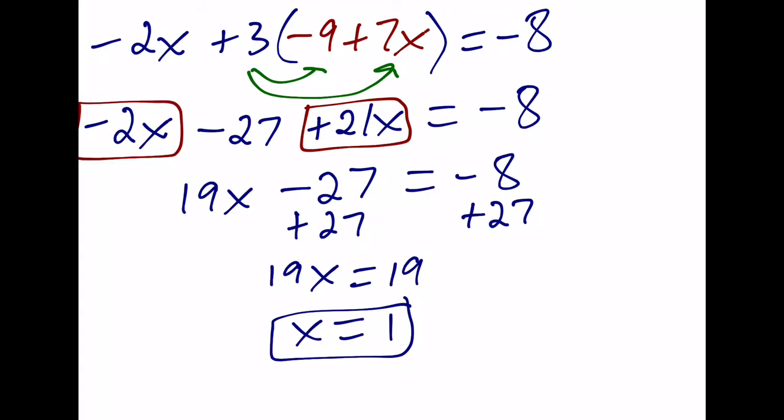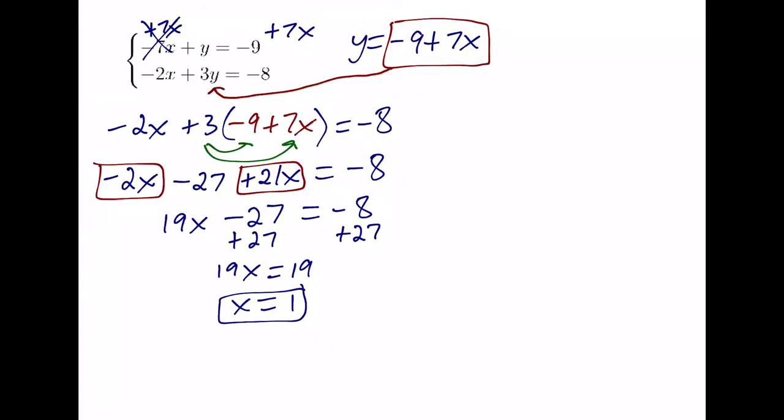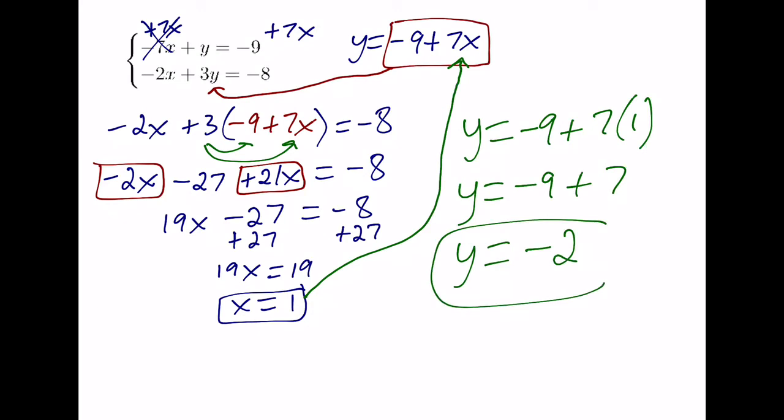How do we figure out what y is equal to? Let's choose one of our original equations and go ahead and plug in 1 for x. If we chose this one, y is now equal to negative 9 plus 7 times 1. Or y is equal to negative 9 plus 7. So y is equal to negative 2. Once we have both x and y, we have our final answer.